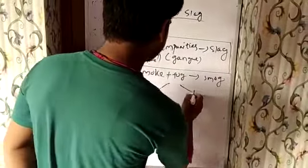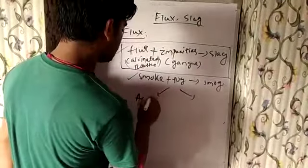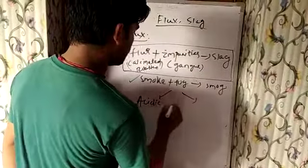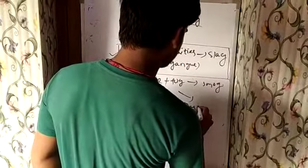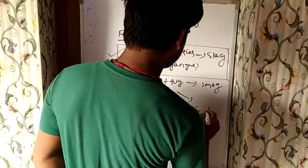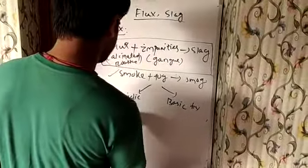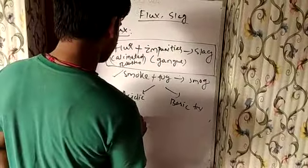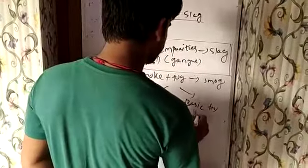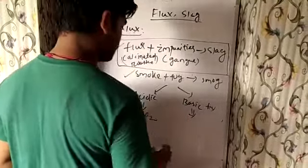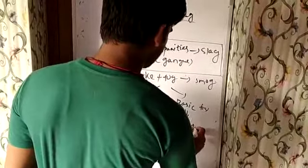There are two types of flux: one is acidic flux and one is basic flux. Acidic flux example is SiO2 (silicon dioxide), and basic flux example is CaCO3 (calcium carbonate).